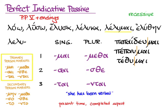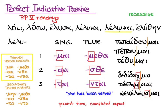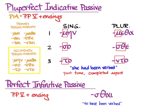But other verbs, like didasko — fifth principal part, dedidagmai; thopto — tethammai; keleuo — kekeleusmai — look different when you chop off their endings. Each of those now has a stem that ends with a consonant. The problem is how do you take a stem that ends with one of those consonant sounds and smash it up against an ending that starts with one of these consonant sounds. The problem is there in the pluperfect indicative passive and the perfect infinitive passive too. All of these words would be unpronounceable or really ugly to a classical Athenian's ear if we did nothing to make the smash-up between consonants a little smoother.